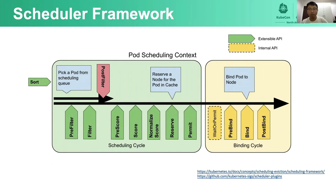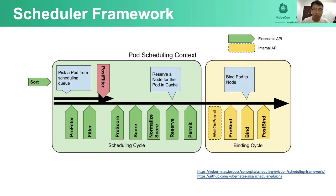Let me introduce how we implement scheduling to use PMEM more reasonably and efficiently. Our implementation is based on the scheduling framework, which is a pluggable architecture for the Kubernetes scheduler adding a new set of plugin APIs. The scheduling framework defines several extension points. We have also implemented strategies in big data and AI through the scheduling framework, such as gang scheduling and elastic quota capacity scheduling. These functions are open source in the scheduler plugin project on GitHub — welcome to try them.